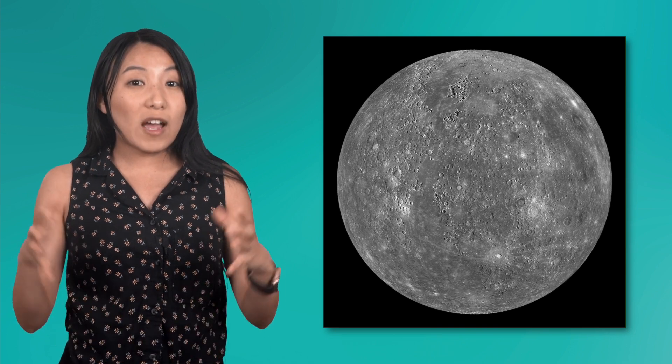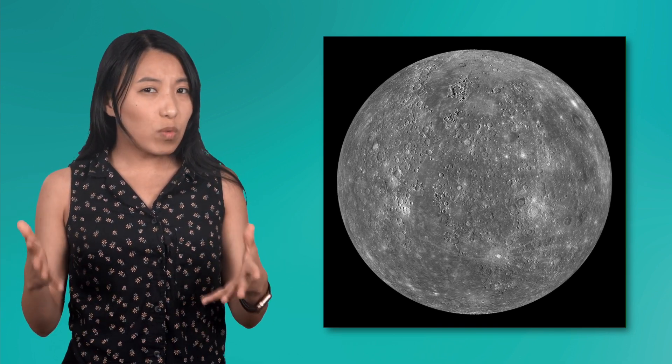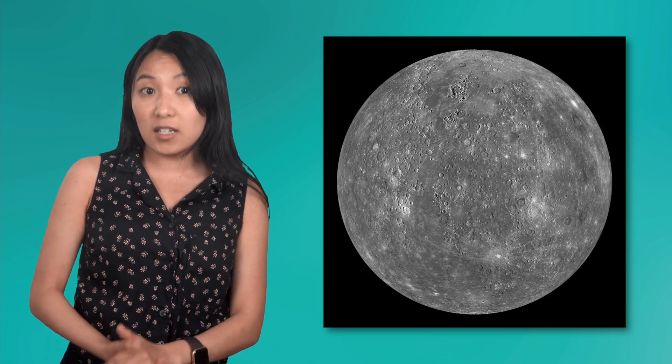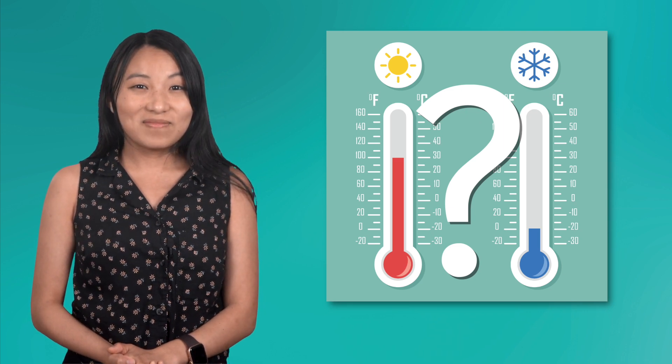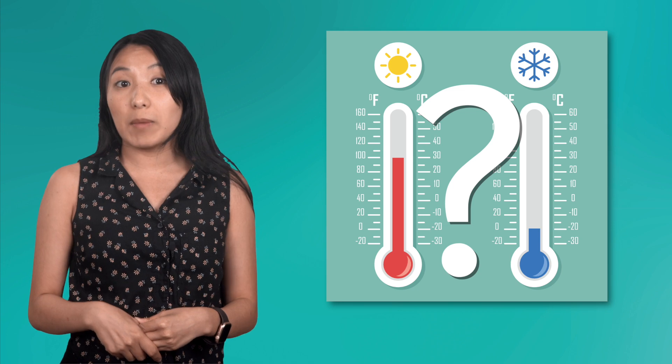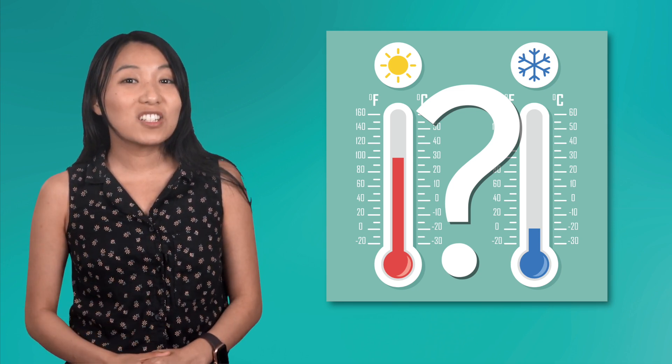It can't really trap heat like our atmosphere. So, with what we know about the conditions on the Moon and how close Mercury is to the Sun, what do you think the temperature might be like there? What about the side that's facing away from the Sun when it's nighttime on Mercury? Go ahead and pause the video and make a prediction in your notes.